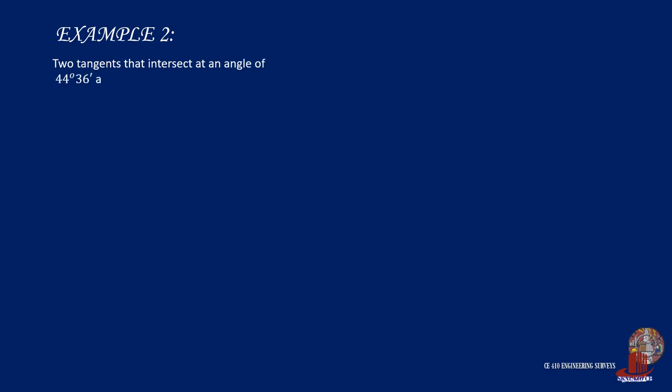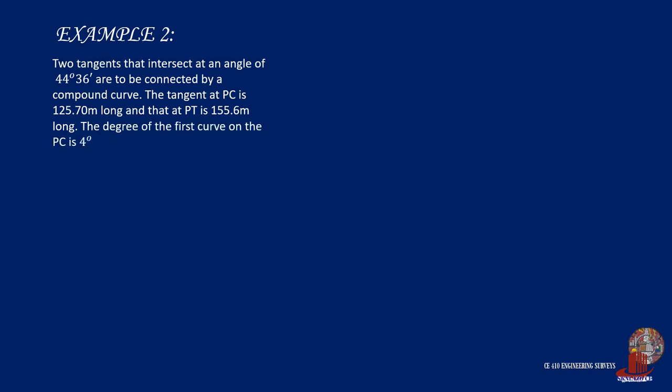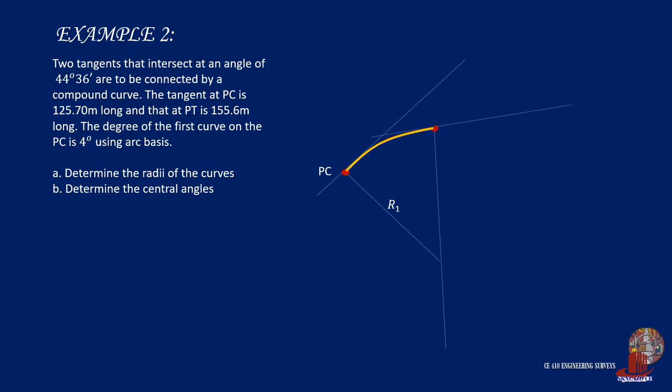Example number 2. Two tangents that intersect at an angle of 44 degrees 36 minutes are to be connected by a compound curve. The tangent at PC is 125.7 meters long, and that at PT is 155.6 meters long. The degree of the first curve on the PC is 4 degrees using arc basis. Determine the radii of the curves and the central angles. The length of tangent from PC to PI is 125.7 meters, and from PI to PT is 155.6 meters. With the degree of the first curve as 4 degrees, we can solve for radius 1 as 1145.916 divided by 4, which is 286.5 meters.